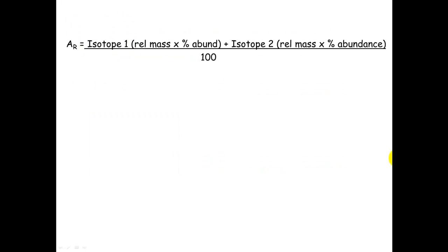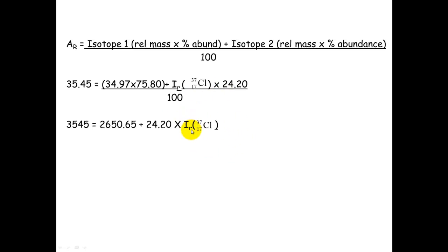So this is a little bit of maths involved. We use this formula here and we plot in the data that we know. We know the relative atomic mass of Chlorine, but we don't know the relative isotopic mass of Chlorine-37. So we need to solve this equation. It's just a case of multiplying all of this out and solving for X, or in this case Chlorine-37. So multiply that out and you get 2650.65. You've got your 24.20 times your unknown isotopic mass of Chlorine-37.